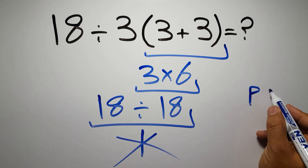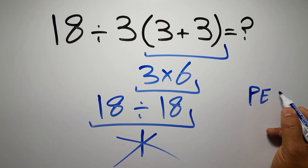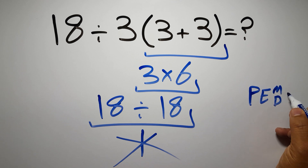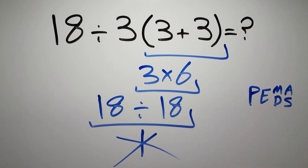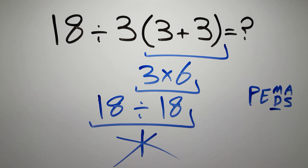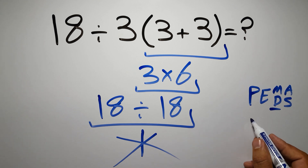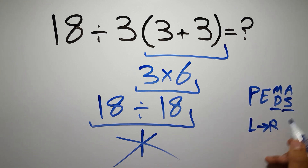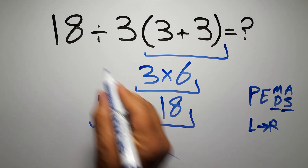According to the order of operations, first we have to do parentheses, then exponents, then multiplication or division, and finally addition or subtraction. Remember that multiplication and division have equal priority, and we have to work from left to right. The same applies to addition and subtraction.